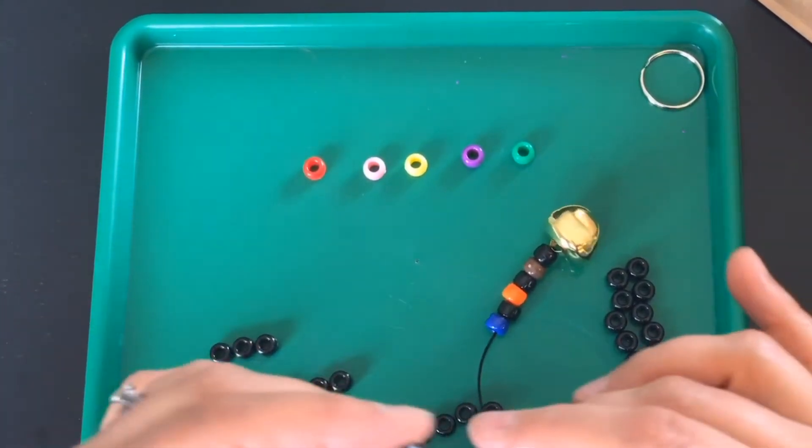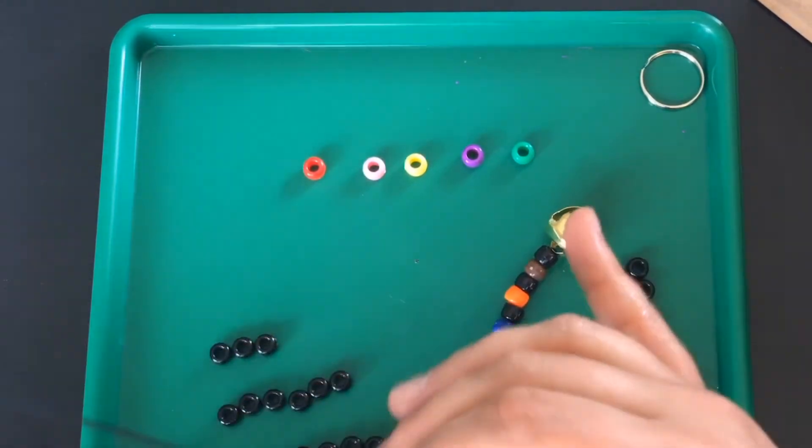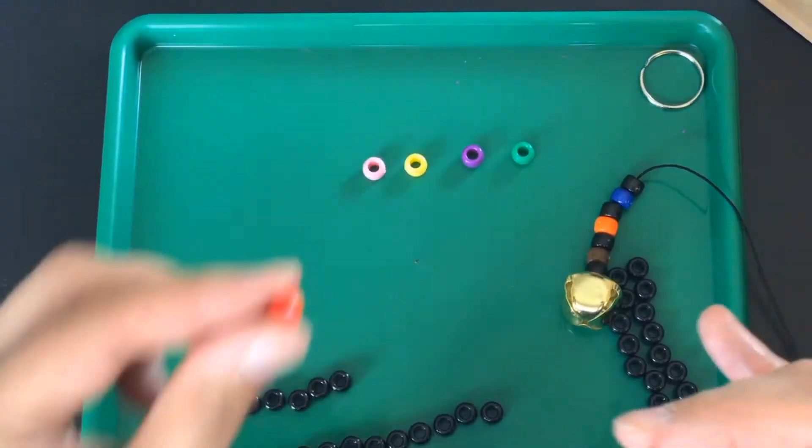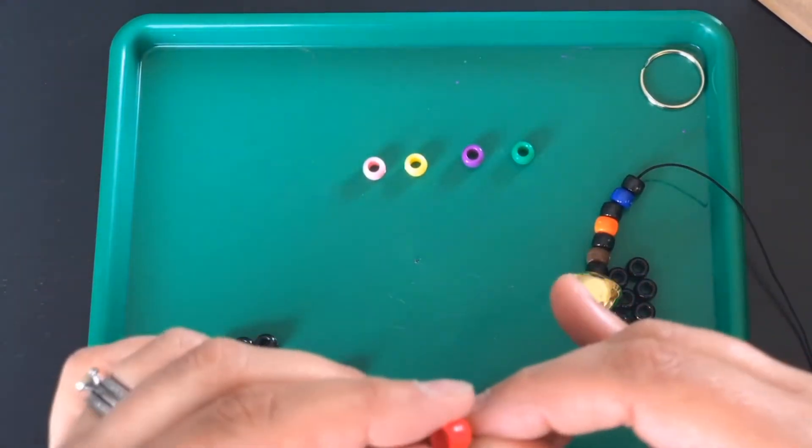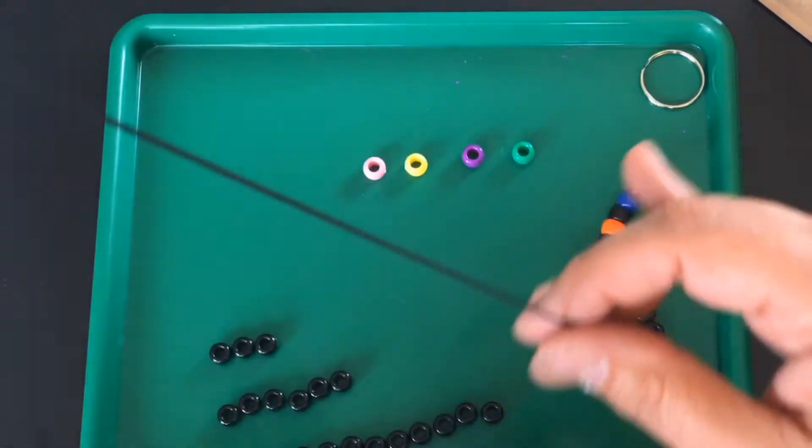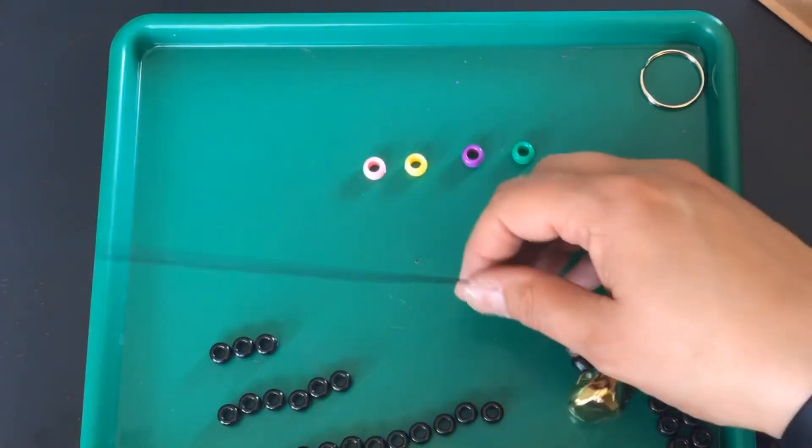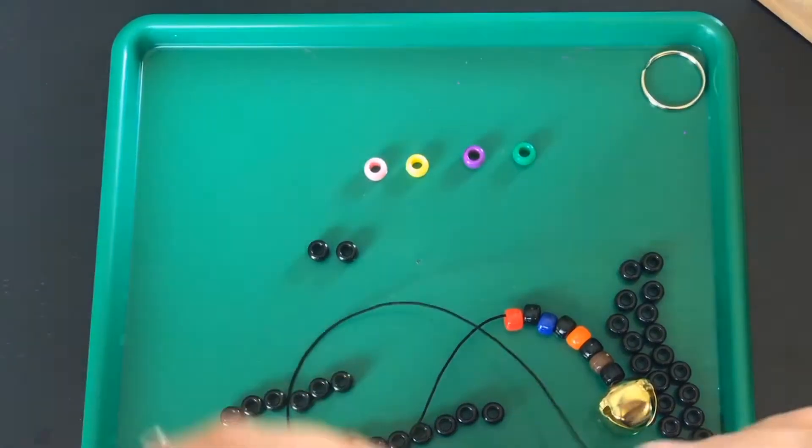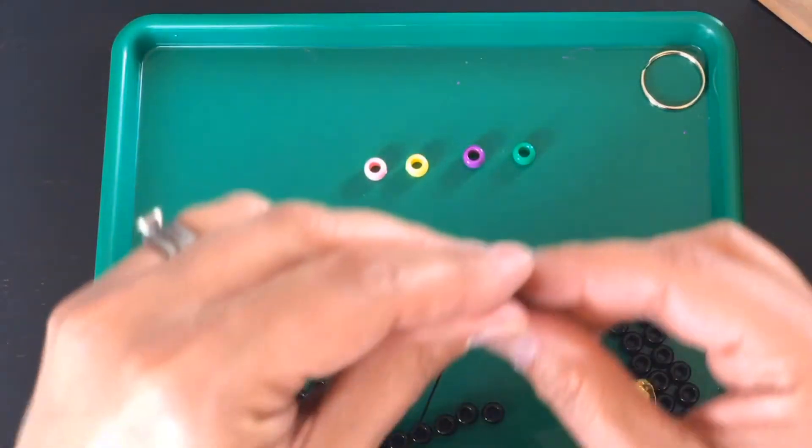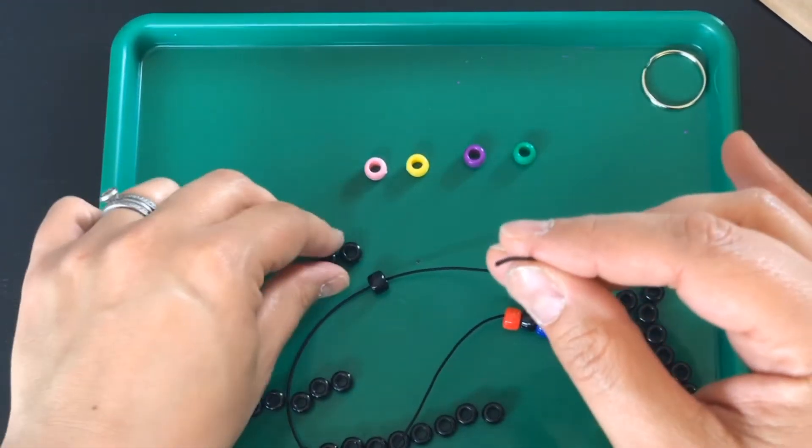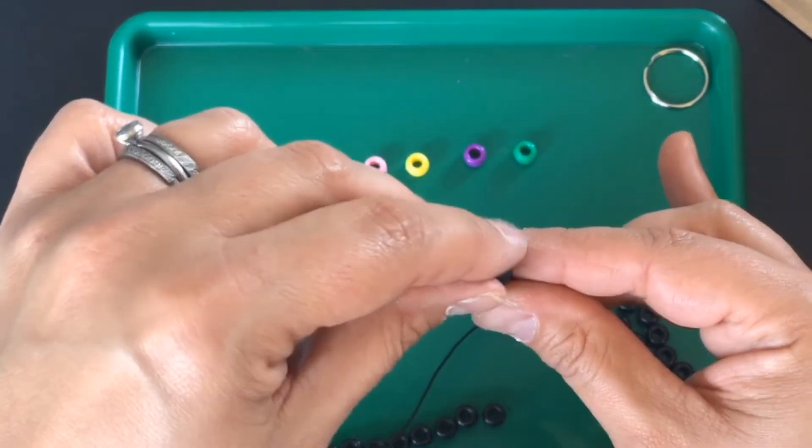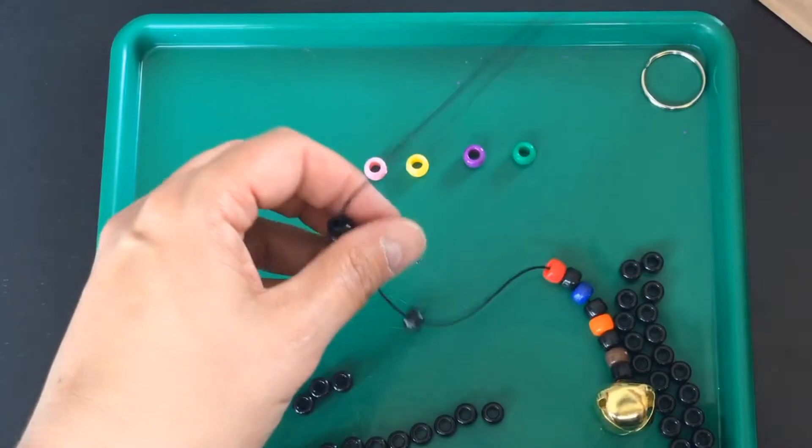Then I am going to put one more black bead that is going to be the distance between Earth and Mars, the next planet, which is our red bead. So I'm threading on Mars. Then after Mars I'm going to put three black beads so you can see the distance between planets is starting to increase.